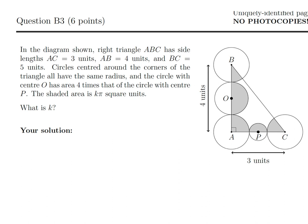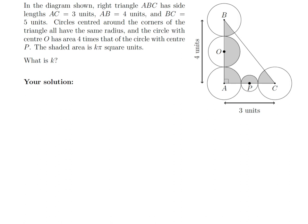In the diagram shown, right angle triangle ABC has side lengths AC = 3, AB = 4, and BC = 5. Circles centered at the corners of the triangle all have the same radius. The circle with center O has area 4 times that of the circle with center P. The shaded area is Kπ square units — what is K? Let's label the common corner-circle radius R. Since the O circle has 4 times the area of the P circle, its radius must be 2X while P's radius is X.